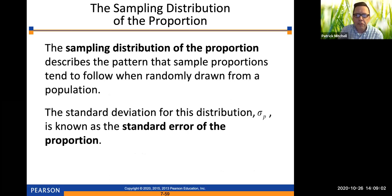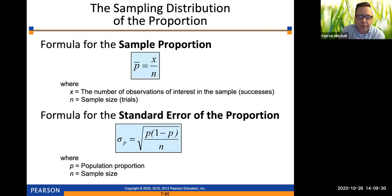The sampling distribution of the proportion describes the pattern that sample proportions tend to follow when randomly drawn from a population. The standard deviation for this distribution, which we'll denote sigma sub p, is known as the standard error of the proportion. Remember, we used similar terminology for the standard error of the mean. So we're going to need a formula for that, and that formula is right here.